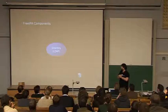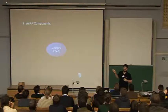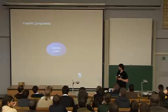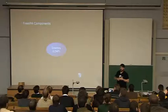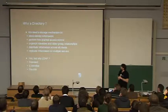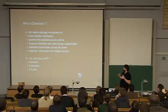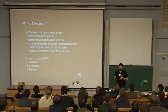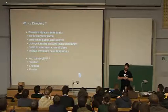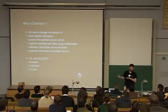Let's see what FreeIPA components we decided to use to solve these problems. The first one is the directory — by directory I mean LDAP. There are other directories like NIS and NIS Plus that have been used in the past, but we found they were not able to do what we needed. We need a storage mechanism to keep identities, and these storage mechanisms need to be able to perform fine-grained access control.